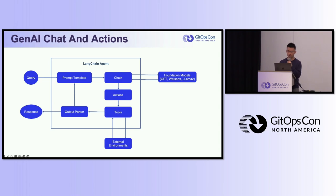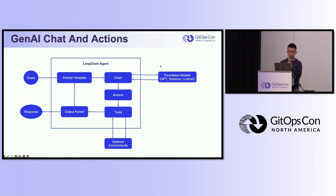The foundation model tells the chain what kind of action and tools are needed. There is also a connection between the output parser and the prompt template, which leads to a loop in the agent. This means that for some complex queries, the agent may talk with foundation models many times, and the foundation model needs to make decisions across many different requests. I will show in detail how the foundation model interacts with the agent to do real GitOps work.